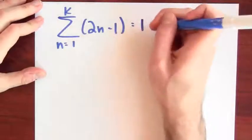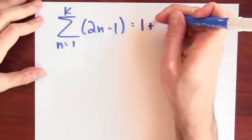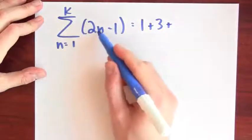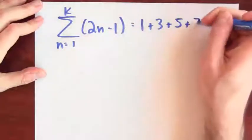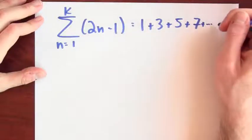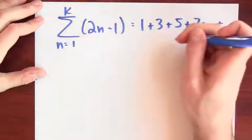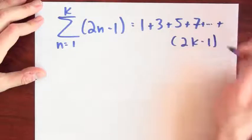So plug in n equals 1, I get 1, plug in n equals 2, I get 3, plug in n equals 3, I get 5, plug in n equals 4, I get 7. And I'm going to keep on going until I end with 2k minus 1.